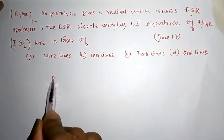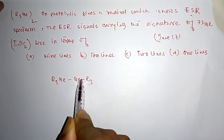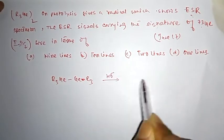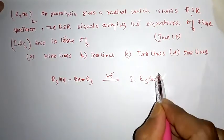We are asked to find out the number of lines in the EPR spectrum. What is given here: there is a species given, it undergoes photolysis and gives a radical.